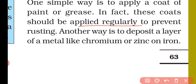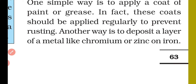Another way to prevent rusting is to deposit a layer of a metal like chromium or zinc on the iron. Have you ever seen the rim of a cycle? It is a shiny silver color, and that shiny silver coating on the iron rim is basically chrome. When we apply a thin layer of chrome on the iron, it prevents rusting. Similarly, we can apply zinc as well.